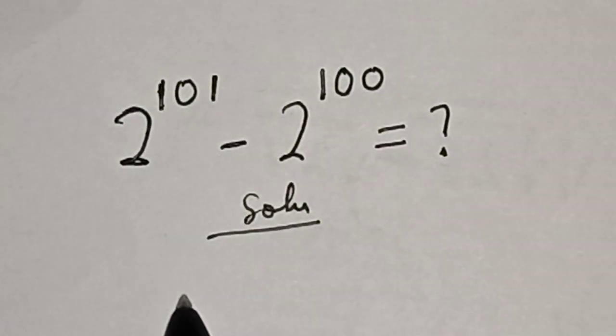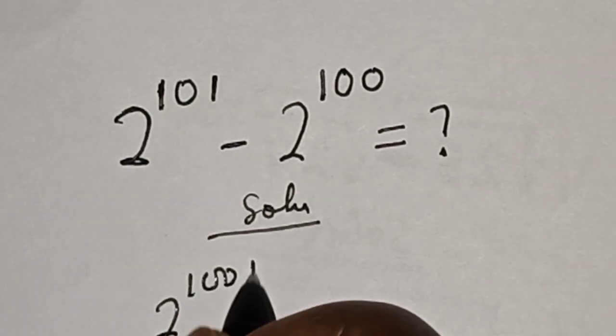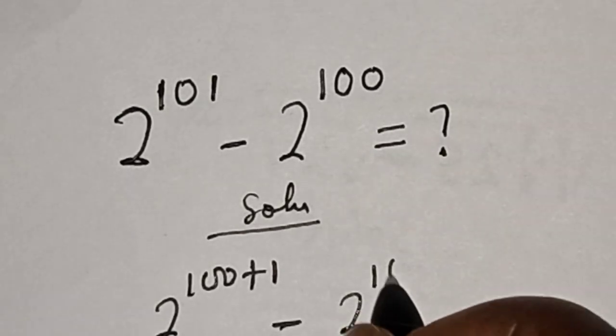We have 2 raised to power 101 can be written as 2 raised to power 100 plus 1 minus 2 raised to power 100.